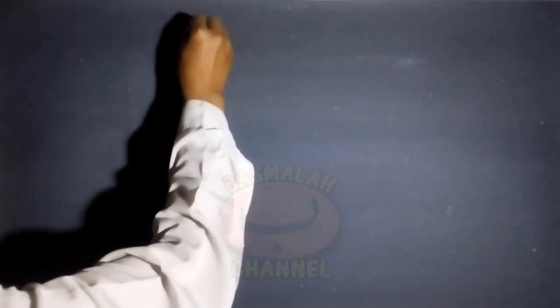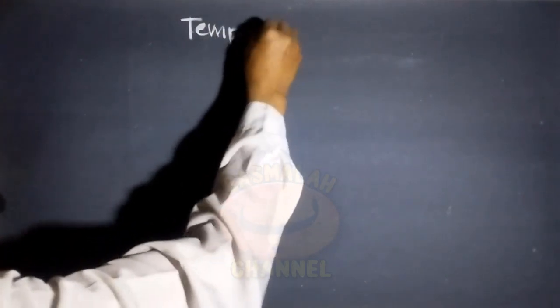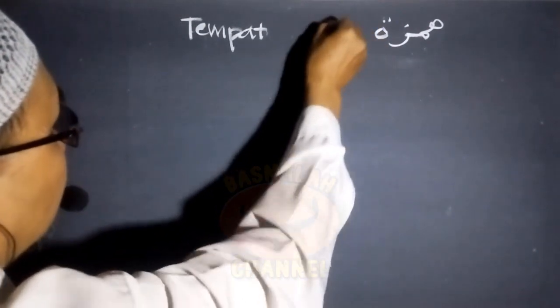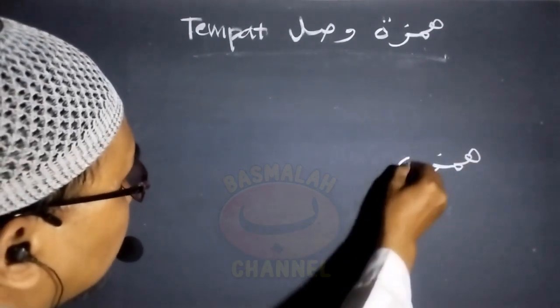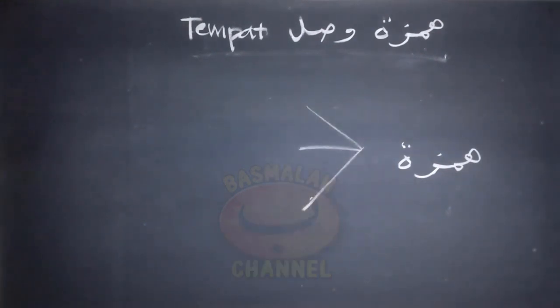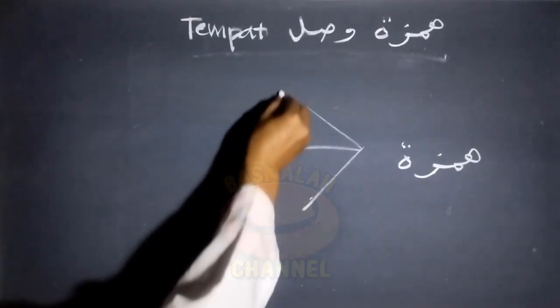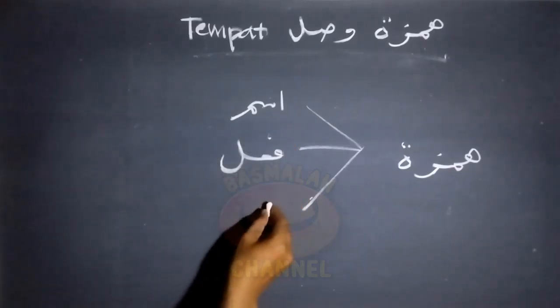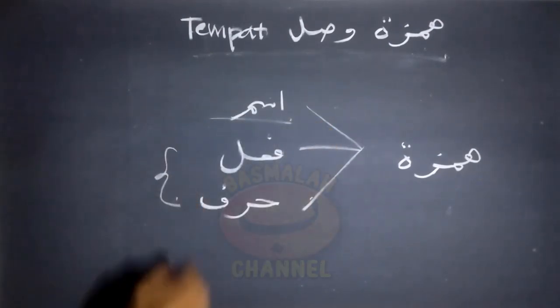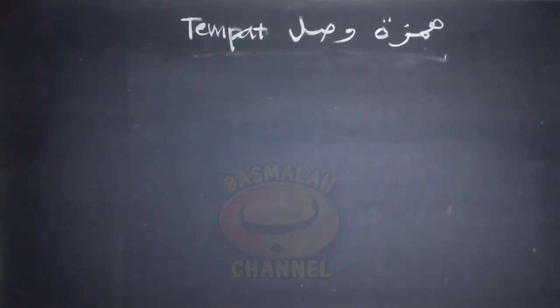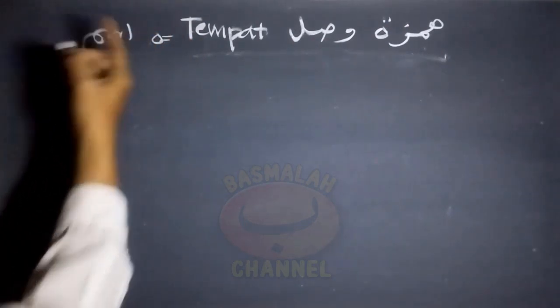Bismillahirrahmanirrahim. Pembahasan kita kali ini masih berkaitan dengan Hamzah Wasol, di mana fokus dalam pembahasan ini adalah tentang di mana saja tempat dari Hamzah Wasol. Pada pembahasan terdahulu telah dijelaskan bahwa Hamzah Wasol itu bisa berada pada tiga kalimat: kalimat isim, kalimat fi'il, dan kalimat huruf. Untuk pembahasan kali ini, fokus Hamzah Wasol yang ada pada kalimat isim, sementara untuk yang ada pada kalimat fi'il dan huruf akan dibahas pada pembahasan selanjutnya.